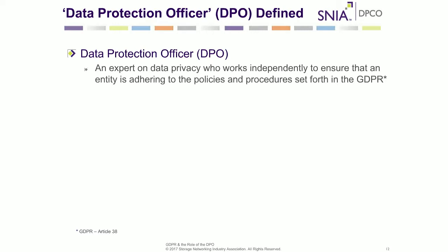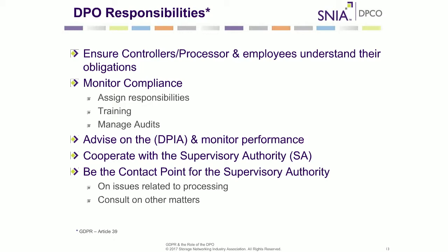Moving to a briefing on the role of the data protection officer: it's important to define what a DPO is. In relation to the GDPR definition, it's an expert on data privacy who works independently to ensure that the company they represent is adhering to the policies and procedures set forth in the GDPR. We will be using the term DPO or data protection officer interchangeably.